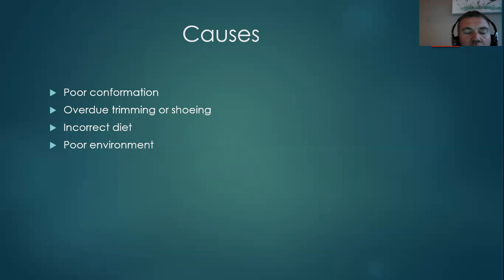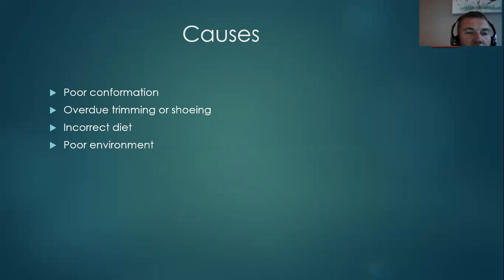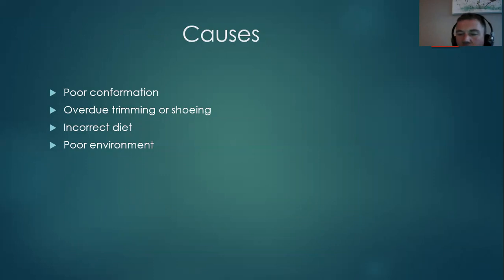An incorrect diet and poor quality hoof horn will be a contributing factor to weakness in the back of the foot. Poor quality environments also tend to allow heels to sink into the ground. If it's quite a wet, boggy environment with a lot of bacterial infections taking place, leading to a crack in the central sulcus of the frog and erosion of the strength of the frog, that can lead to a low, weak heel as well.